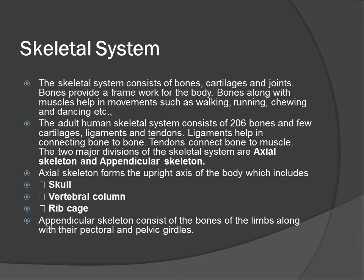The skeletal system consists of bones, cartilages and joints. Bones provide a framework for the body. Bones along with muscles help in movements such as walking, running, chewing and dancing. The adult human skeletal system consists of 206 bones and few cartilages, ligaments and tendons. Ligaments help in connecting bone to bone. Tendons connect bone to muscle.